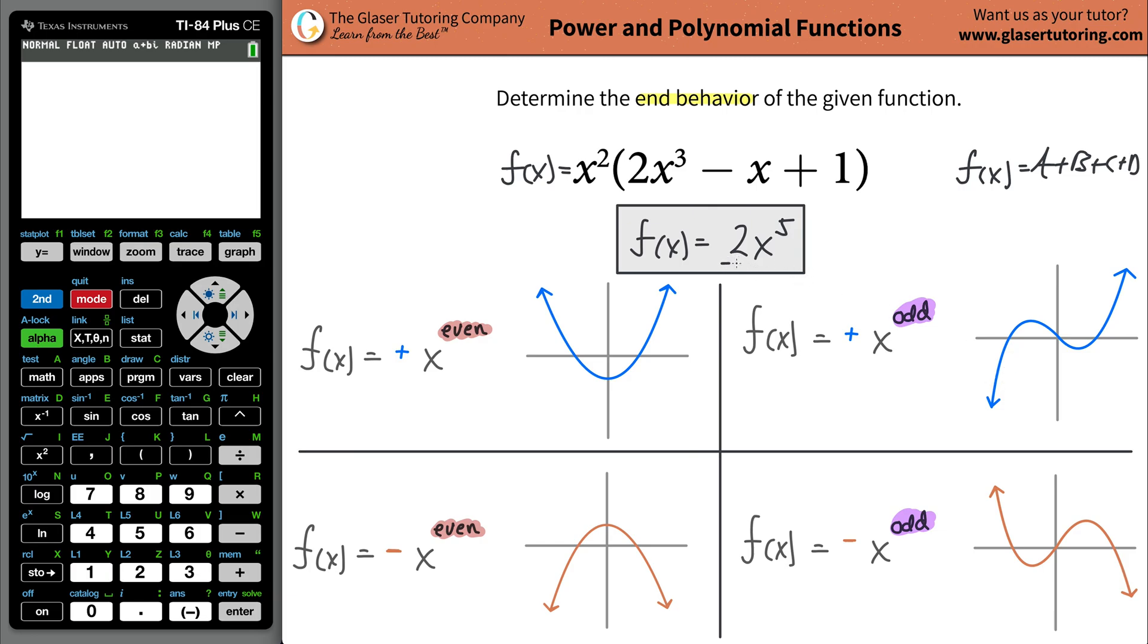Then what you have to do is determine what the leading coefficient sign is, and the sign in here is positive. So you have a positive leading coefficient and you have an odd power. Odd degree. So this graph will now represent the general shape and the general behavior of your given function. It's not going to match it perfectly, but what I will guarantee is this is what will match perfectly.